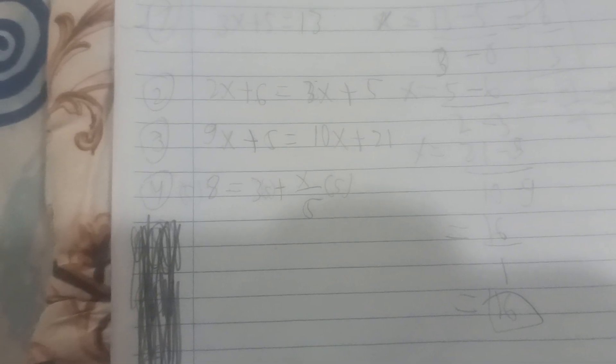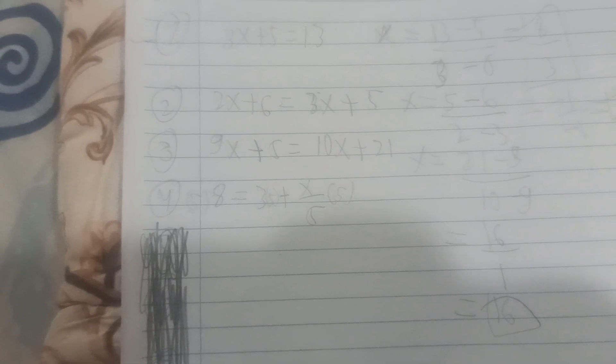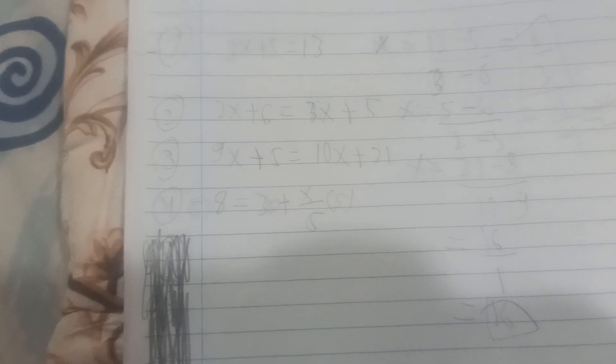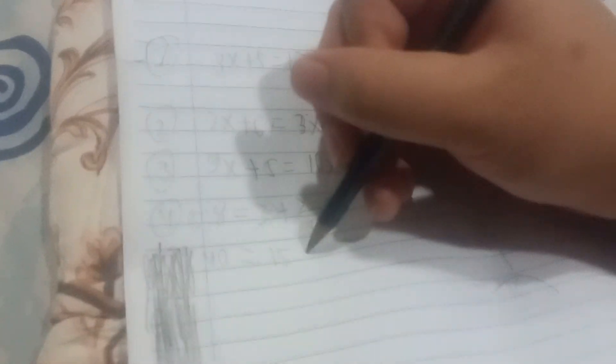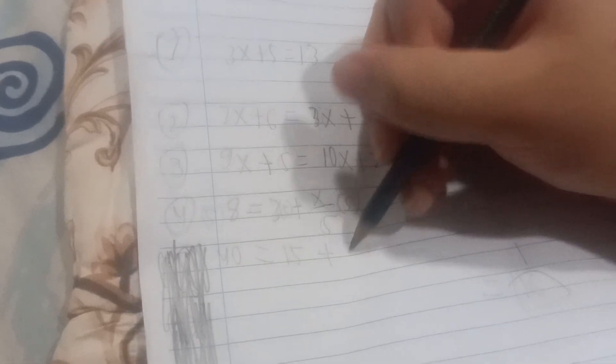Wait, wait, wait. Oh yeah, I hope you can see clearly. So it's 8 times 5 and then 3 times 5 and then plus X over 5 times 5. So what's 8 times 5? 40. Then it's equal to 15 plus X.